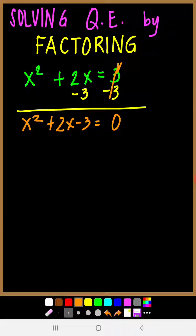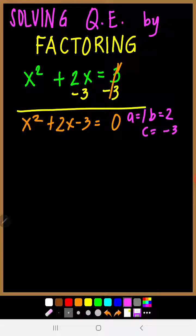After putting the quadratic equation in standard form, we are going to factor it. In my previous videos, I showed you how to factor quadratic equations where a is equal to 1. For this equation, a is equal to 1. So we identify a, b, and c: a is 1, b is 2, and c is negative 3.